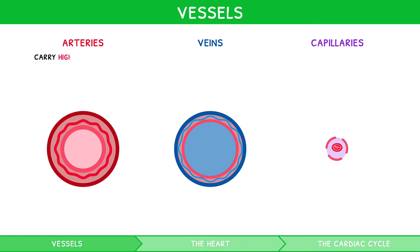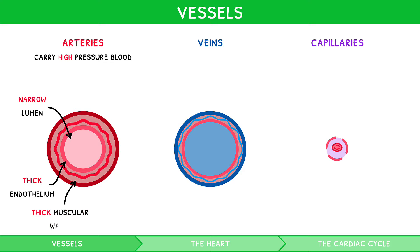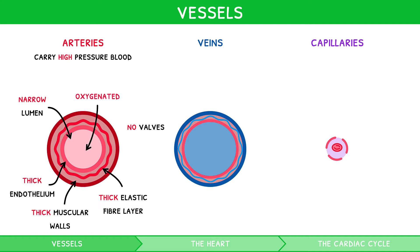Arteries carry blood at high pressure due to their narrow lumen. They have thick endothelium and thick muscular walls containing a thick elastic fibre layer to prevent bursting. They have no valves as there is no risk of backflow due to the high pressure. And generally, they carry oxygenated blood away from the heart towards tissues. You can remember this with 'A for away.'